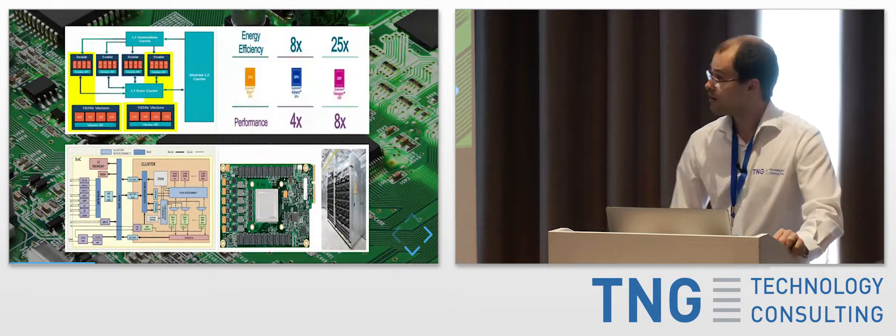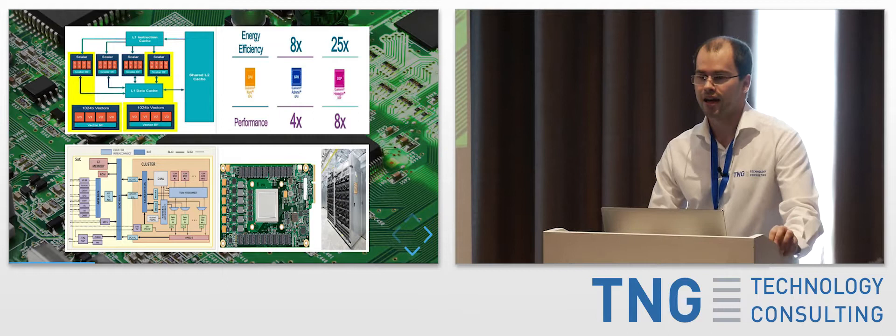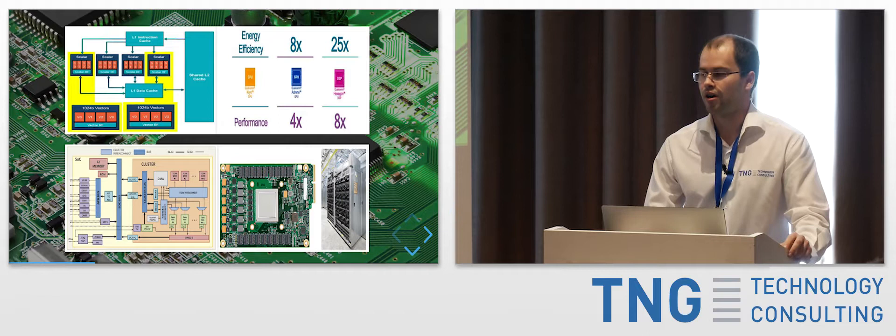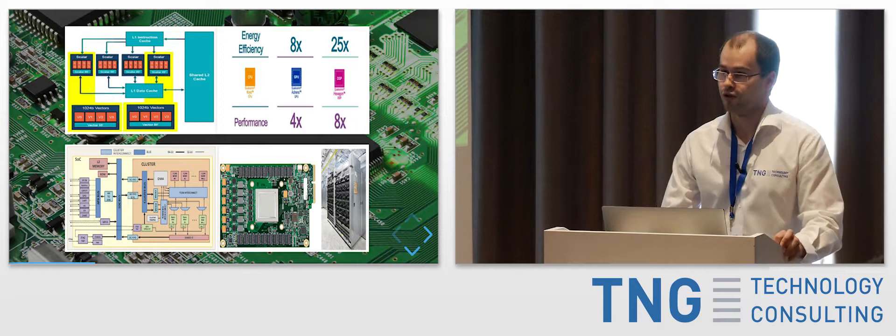The Snapdragon architecture has scalar units and vector units where you can do vector multiplications, additions, and similar operations really fast. In the real world, performance compared to the CPU was improved by eight times and energy efficiency increased by a factor of 25 already.